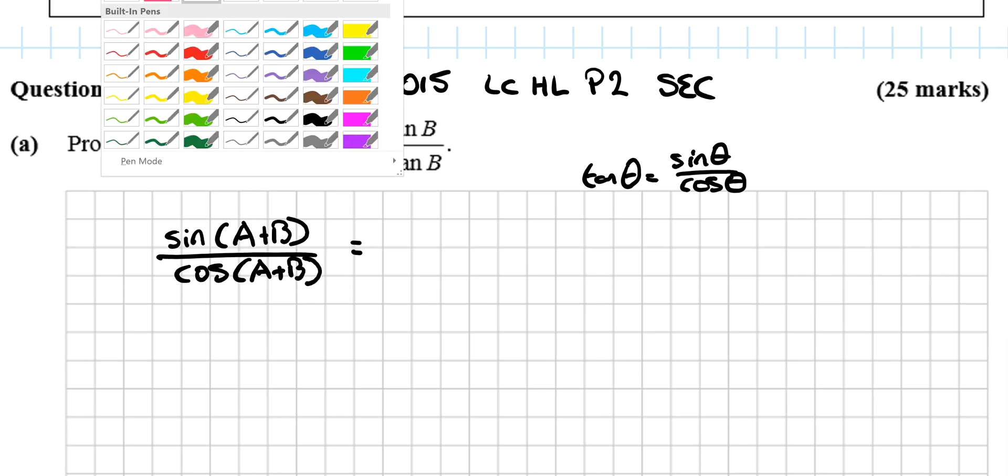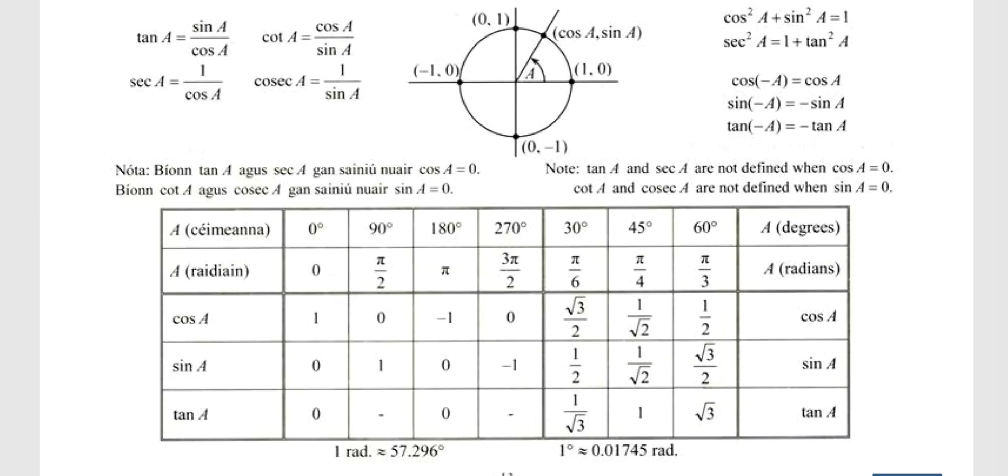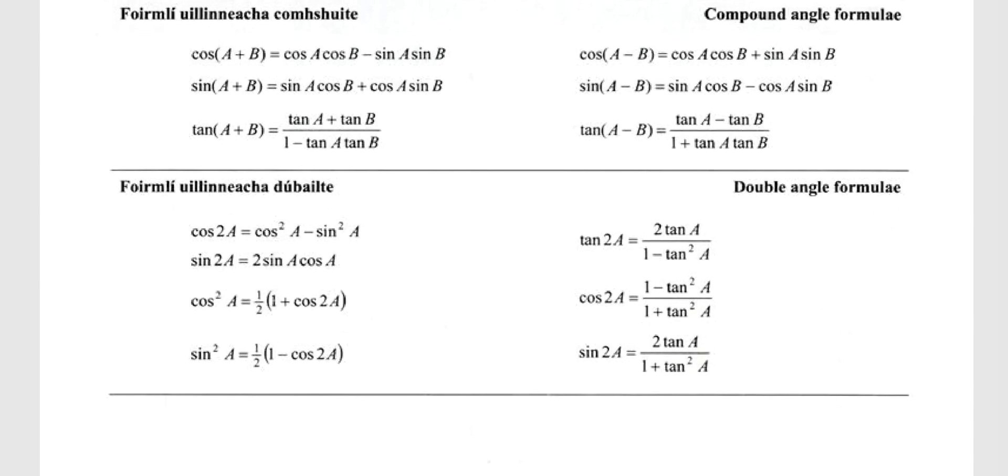From that, you want to go to your log tables. Now, that is in your log tables—tan(A) is sin(A) over cos(A), so tan(θ) is sin(θ) over cos(θ) in the top left-hand corner here.